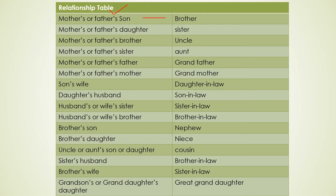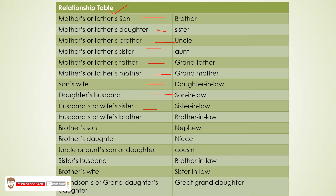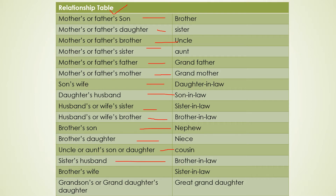Mother's or father's son is called brother. Mother's and father's daughter is called sister. Mother's or father's brother is called uncle. Mother's or father's sister is called aunt. Mother's or father's father is called grandfather. Mother's or father's mother is called grandmother. Son's wife is called daughter-in-law. Daughter's husband is called son-in-law. Husband's or wife's sister is called sister-in-law. Husband's or wife's brother is called brother-in-law. Brother's son is called nephew. Sister's son is called nephew.